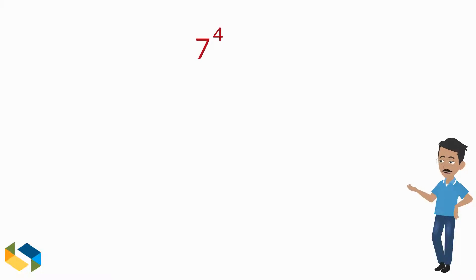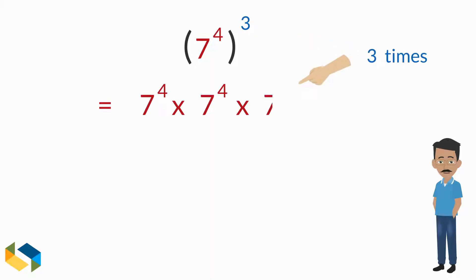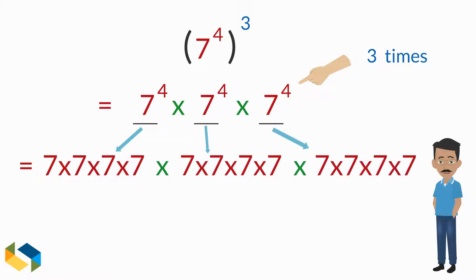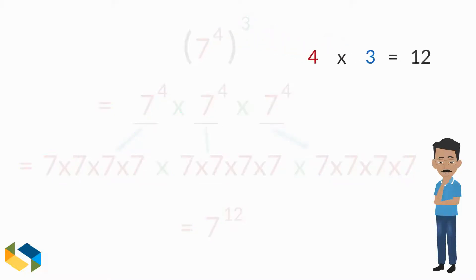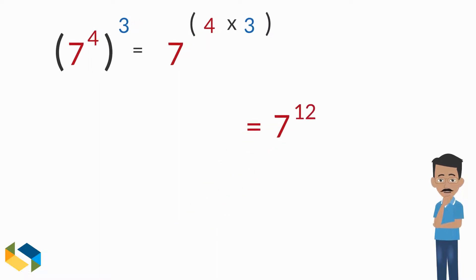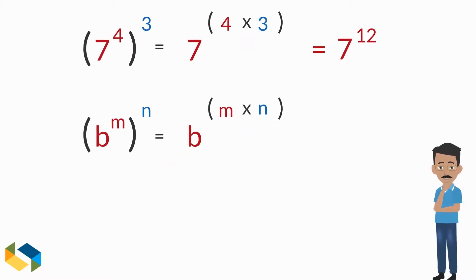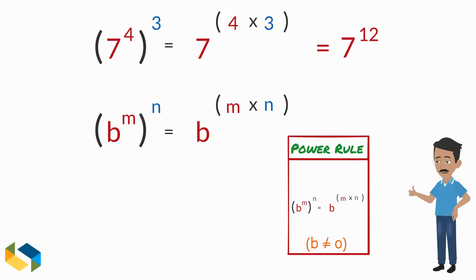Now let's complicate the expressions a little bit: seven raised to the power four, raised to the power three. If you have followed the fundamentals so far, this is not as complicated as it looks. That's a lot of sevens — twelve to be precise. Four multiplied by three is twelve. Hence this is the same as multiplying the two exponents. In variable form: B raised to the power M, raised to the power N, equals B raised to the power M times N. This is called the power rule.